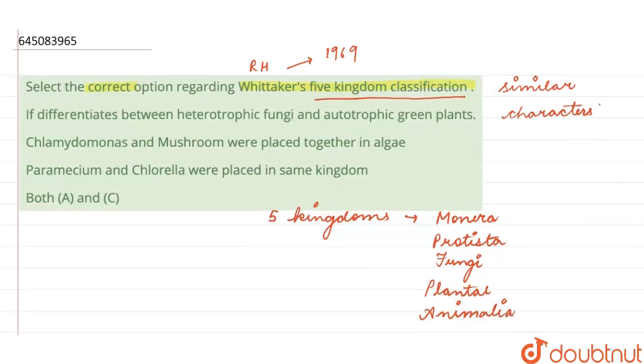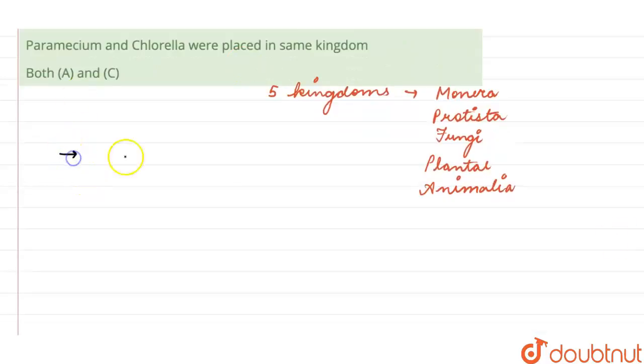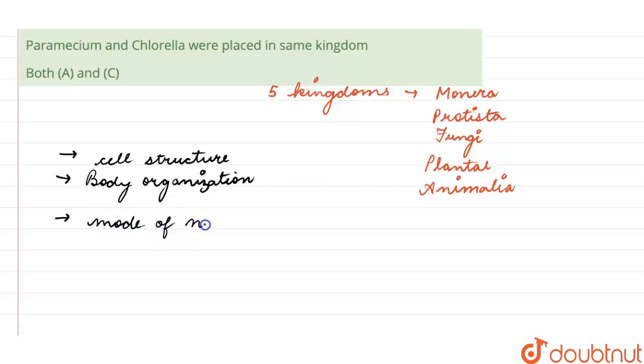This classification was based on following characteristics that included cell structure, body organization, mode of nutrition, reproduction, and phylogenetic relationships. Based on these characteristics, he gave a five kingdom classification.